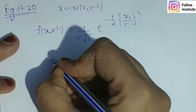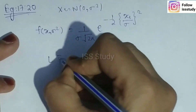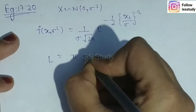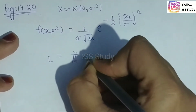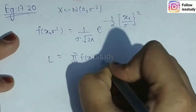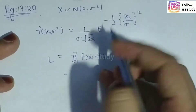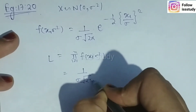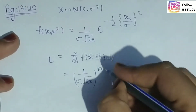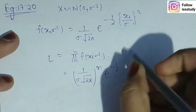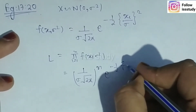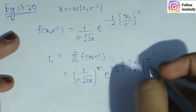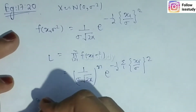The next step is to form the likelihood function: L = Π(i=1 to n) f(xi; σ²). When we substitute the PDF, the first term becomes a constant raised to the power n, and the exponent becomes −(1/2) · (Σxi²)/σ².